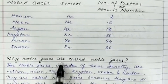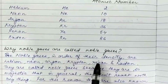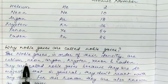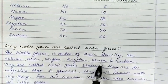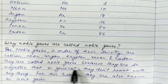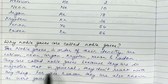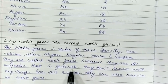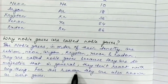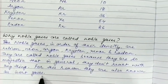Why are Noble Gases called Noble Gases? The noble gases in order of their density are Helium, Neon, Argon, Krypton, Xenon, and Radon. They are called noble gases because they are so majestic that in general they do not react with anything. For this reason, they are also known as inert gases.